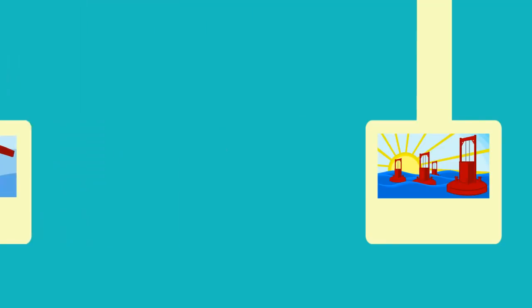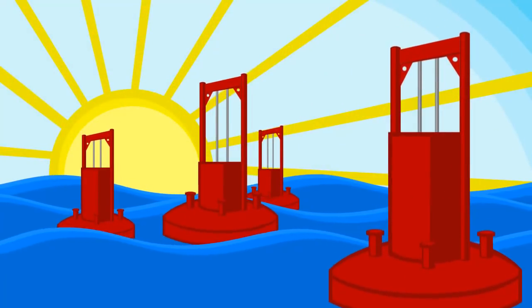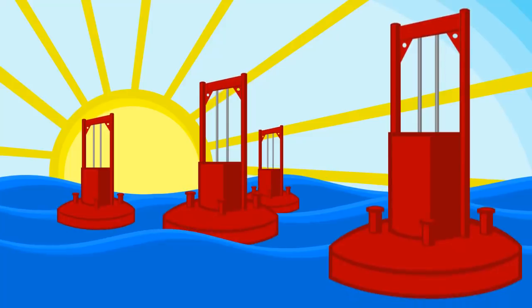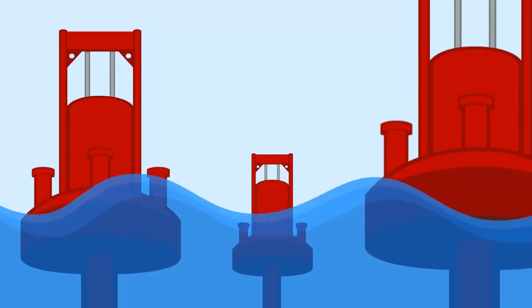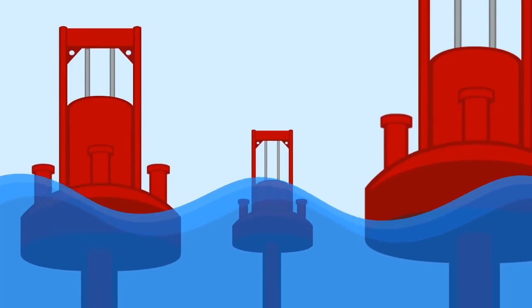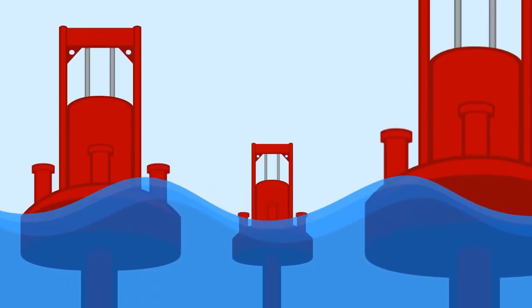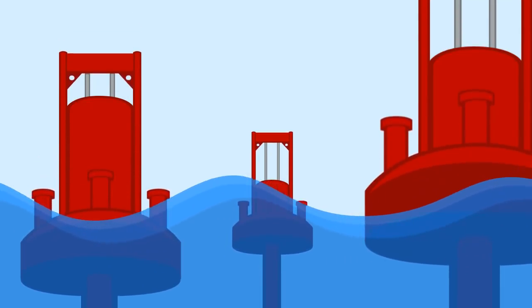Another way to collect wave energy is using a point absorber. A point absorber works using a buoy that floats above the water to generate power. A giant shaft is anchored to the seafloor with the buoy secured on top. As the buoy moves up and down with the waves, the pumping action is converted into electricity.